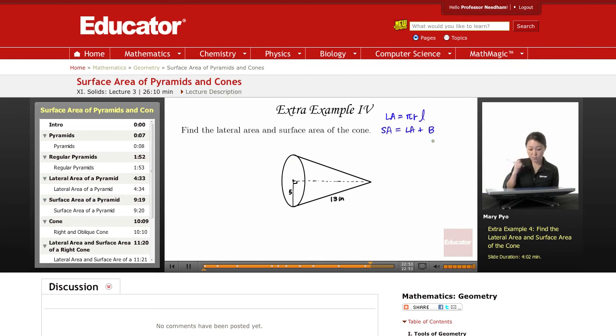So first, let's look for lateral area. LA is pi times radius is 5, and the slant height would be this right here.